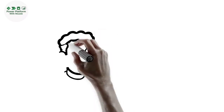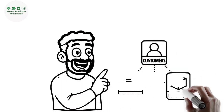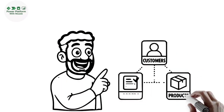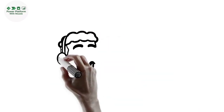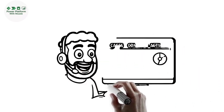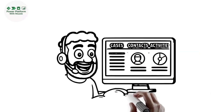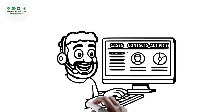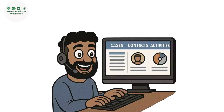So if your data has relationships — like customers, orders, and products — Power Apps will automatically create forms, views, and navigation for you. Imagine you're building a customer support system where you want agents to see cases, related contacts, and activities, and track their progress. Model-driven apps are ideal here because the data is complex and relational.